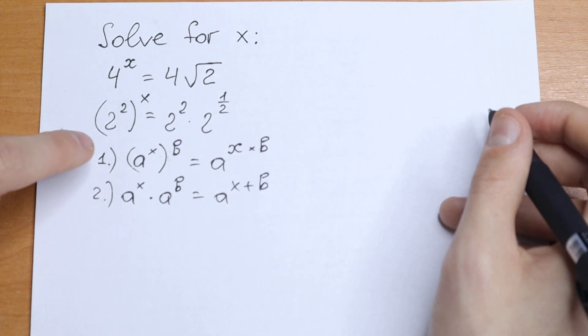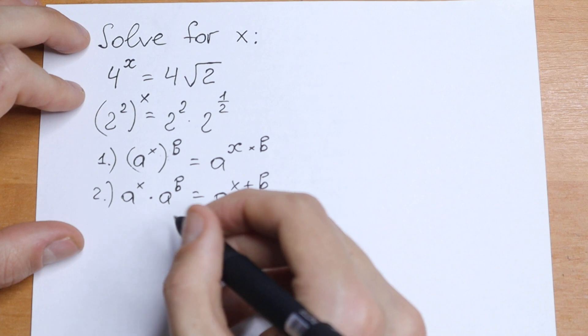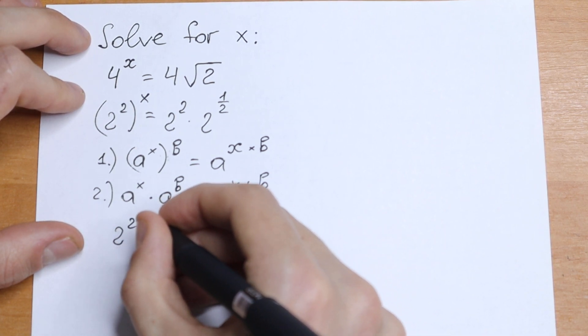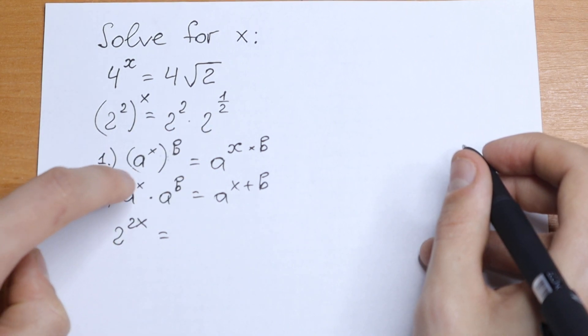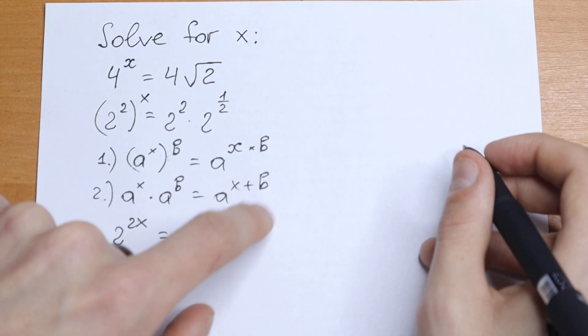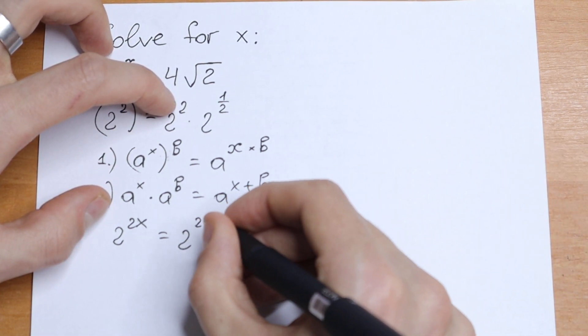So using these two rules. The first rule we use here - multiplying 2 times x, so we will have 2 to the power 2x. And on the right we have the same basis but different exponent. So we need to add all of these powers. We will have 2 to the power 2 plus 1 half.